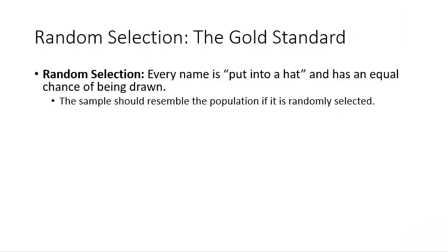So, random selection is the gold standard. Every name is put into a hat and has an equal chance of being drawn. We know that the sample should resemble the population if it is randomly selected.